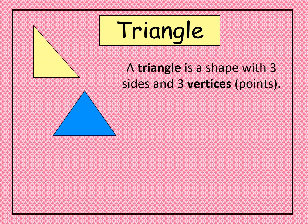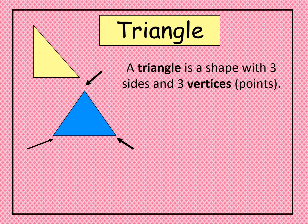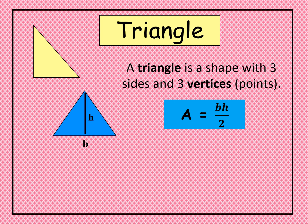The next plane figure is the triangle. A triangle is a plane figure with 3 sides and 3 vertices or points. In a triangle, we also have the height and the base. The formula for the area of a triangle is A equals b times h divided by 2, where b is for base and h is for height.